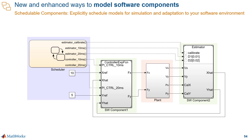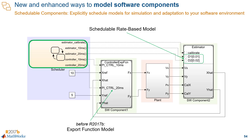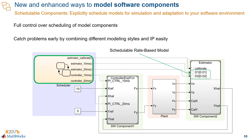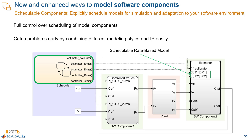Now let's imagine that you have to explicitly control the execution of your model components. Before 17B, the only option was to create an export function model. Starting in 17B, we introduced the ability to schedule rate-based models, which you can do with something like a Stateflow chart. Schedulable components give you full control over how those components in your models execute, and they give you the flexibility to easily combine different modeling styles — export functions and rate-based styles in your models.